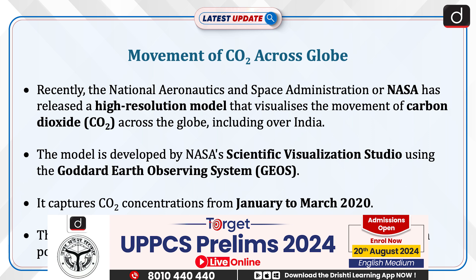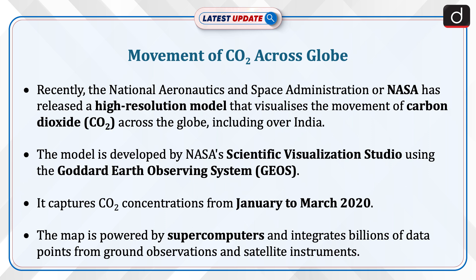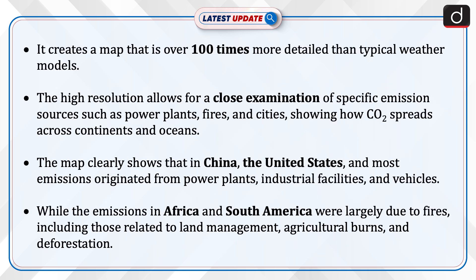The model is developed by NASA's Scientific Visualization Studio using the Goddard Earth Observing System, i.e. GEOS. It captures carbon dioxide concentrations from January to March 2020. The map is powered by supercomputers and integrates billions of data points from ground observations and satellite instruments, creating a map that is over 100 times more detailed than typical weather models.